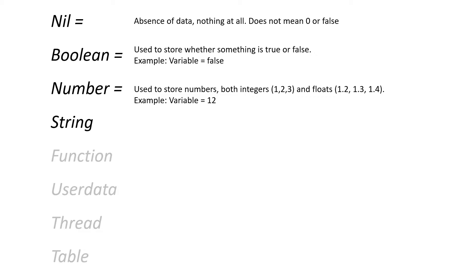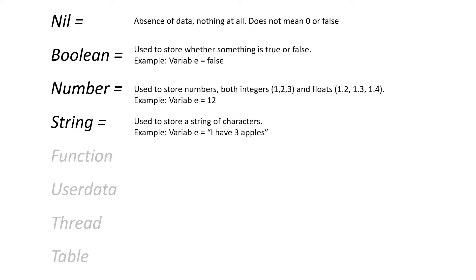An example where we could use a number variable is to store the health of a player character. Finally, a string is a way to store a sequence of characters. This could be used to store the name of the player or instructions that you want to display on the screen.